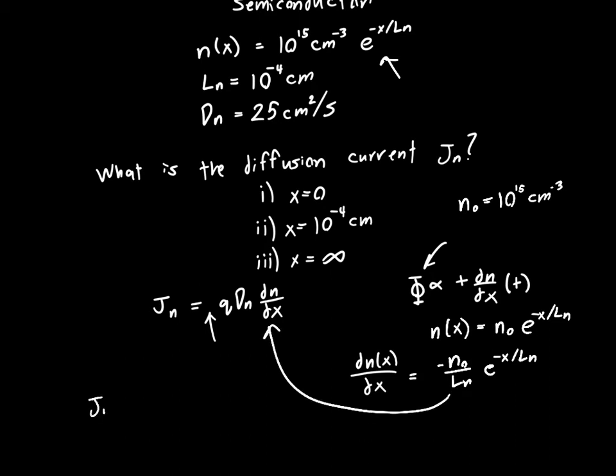So if we plug this back into our original equation, we'll get that Jn is equal to minus q Dn over Ln times n-naught e to the minus x over Ln.